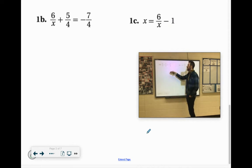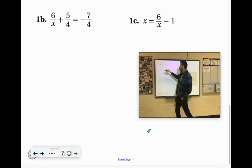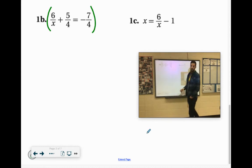So 1b, 6 over x plus 5 over 4 equals negative 7 over 4. We're going to clear these fractions by multiplying by the lowest common denominator.